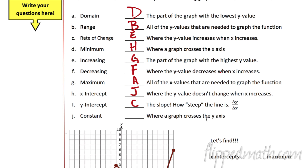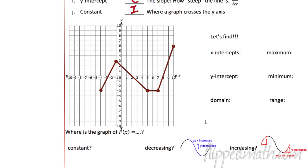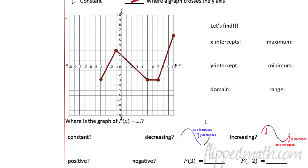And where a graph crosses the y-axis — that is the y-intercept. Hopefully all of those were somewhat review, maybe some new words in there. We're just going to get really good at looking at a graph and finding all these different things, and learning how to communicate and write down what these are.